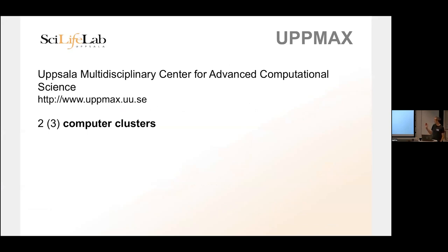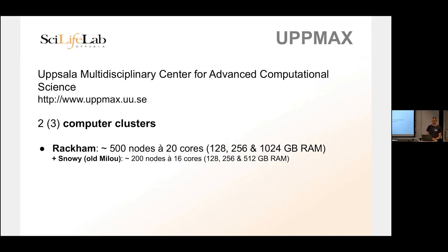We touched slightly on this in the previous lecture. UPPMAX is the primary center for advanced computational science. We have three clusters at the moment. The first is Rackham, which we've been working on this morning — that's about 500 nodes. A node is the same thing as a computer, so it's 500 computers. You could go and buy these kinds of things at regular electronics stores. So it's not special magical hardware; it's ordinary computer hardware.